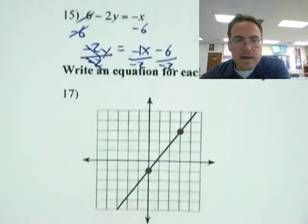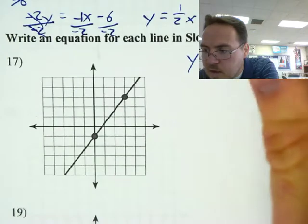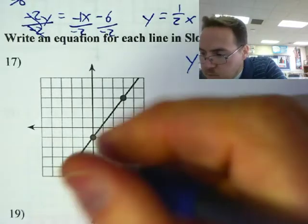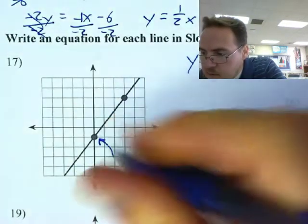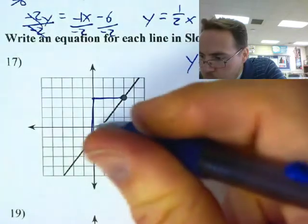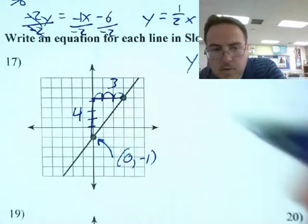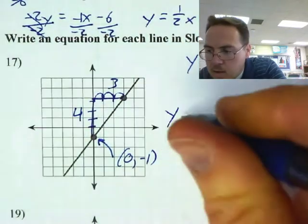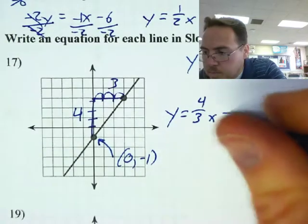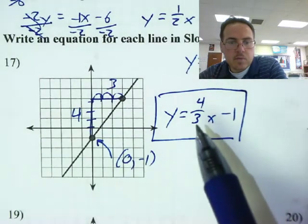Let's write an equation for each line in slope-intercept form: y equals mx plus b. The two things I need are the slope and the y-intercept. For number 17, the y-intercept is at (0, negative 1). The slope goes up 4 and over 3. So y equals 4 thirds x minus 1. There's the slope, and there's the y-intercept.